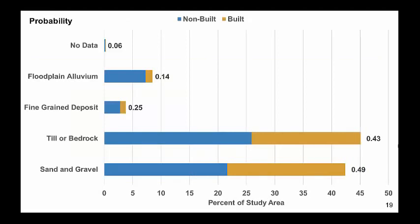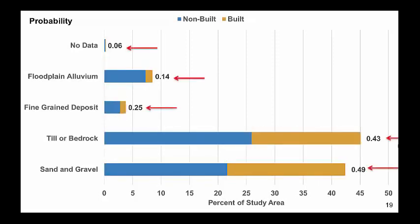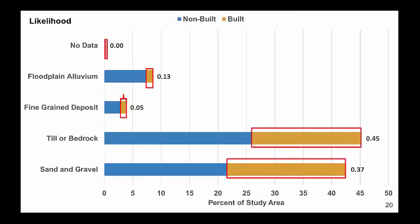This figure shows a comparison of built and non-built areas of each category of geology. Orange is built and blue is non-built. The numbers directly to the right of the orange bars show each geology type's probability. For fine-grained deposit, 25% of it is built. The probability for each category is the length of the orange segment of the bar divided by the total length of the bar. Using the same data, the numbers to the right of the orange bar show built's likelihood for each geology type. The likelihood is the length of the orange segment divided by the sum of the lengths of all the orange segments. The likelihood of built on fine-grained deposit is 5%.